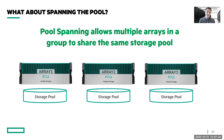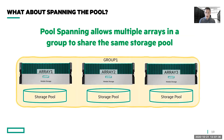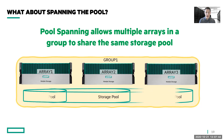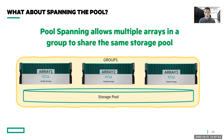Some customers have also asked about spanning pools for migration. Spanning pools allows multiple arrays in a group to share the same storage pool. In this illustration, we see a single storage pool for three different arrays. You can group up to four Nimble storage arrays together, and then span a pool across all of them. The primary use case for this is aggregated performance capabilities for single workloads, but it could also be used for migrations.